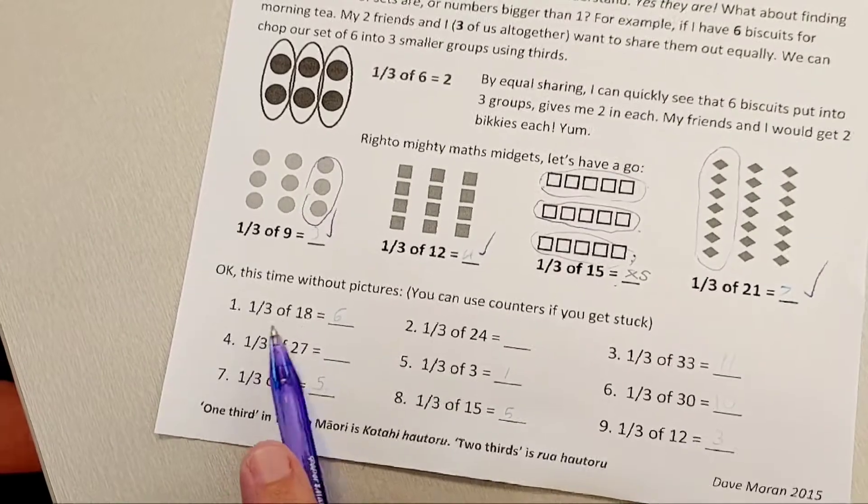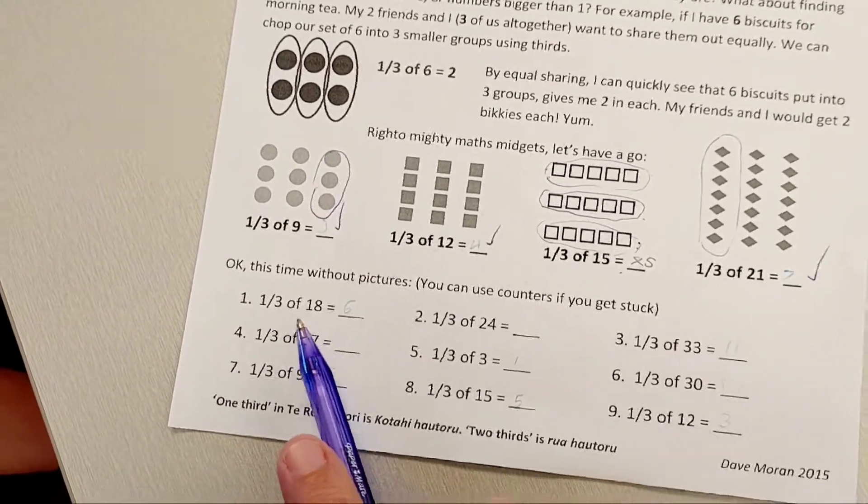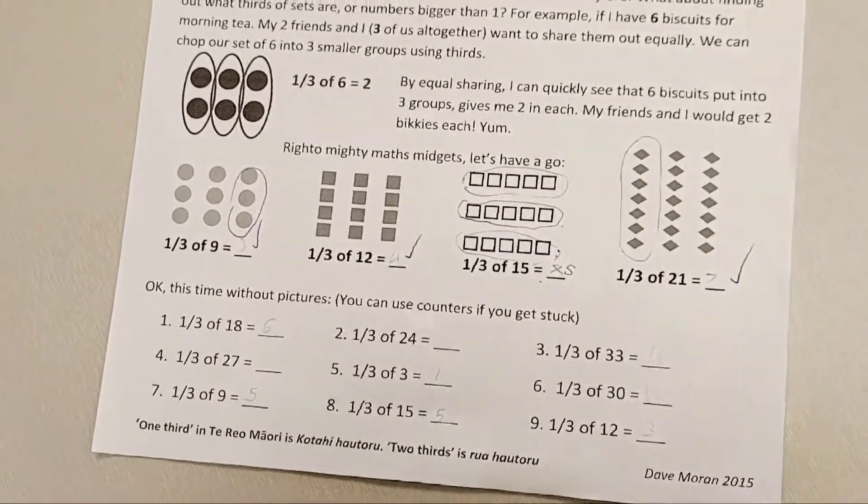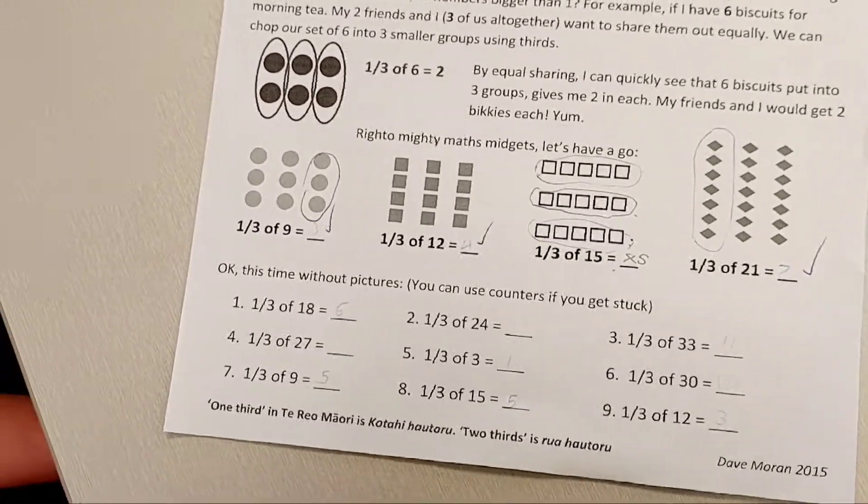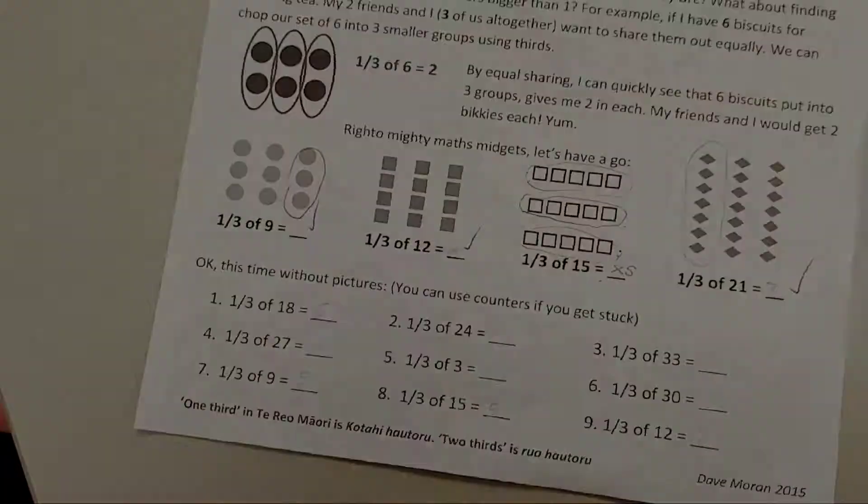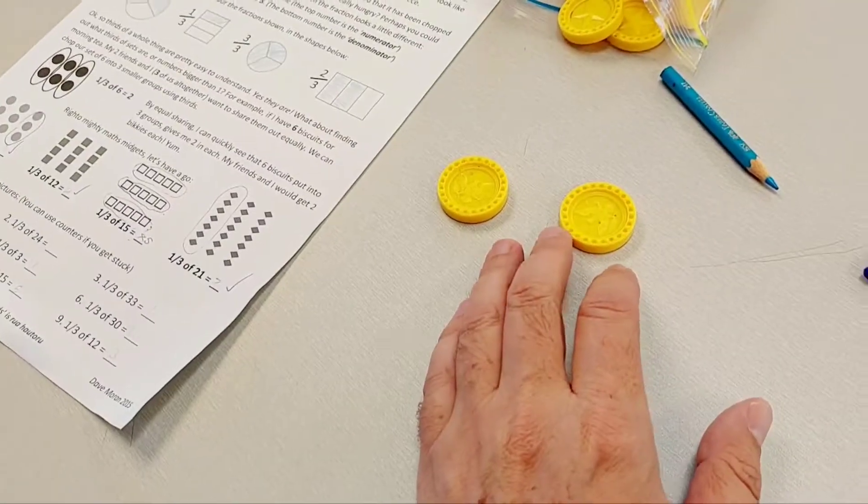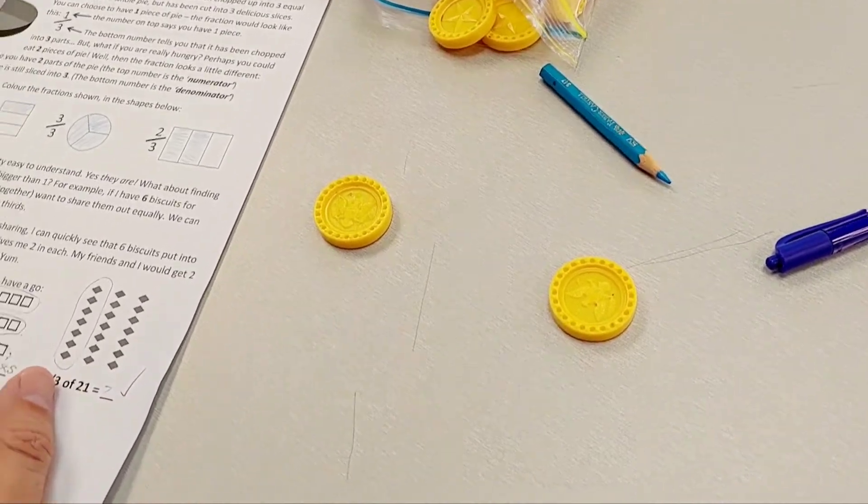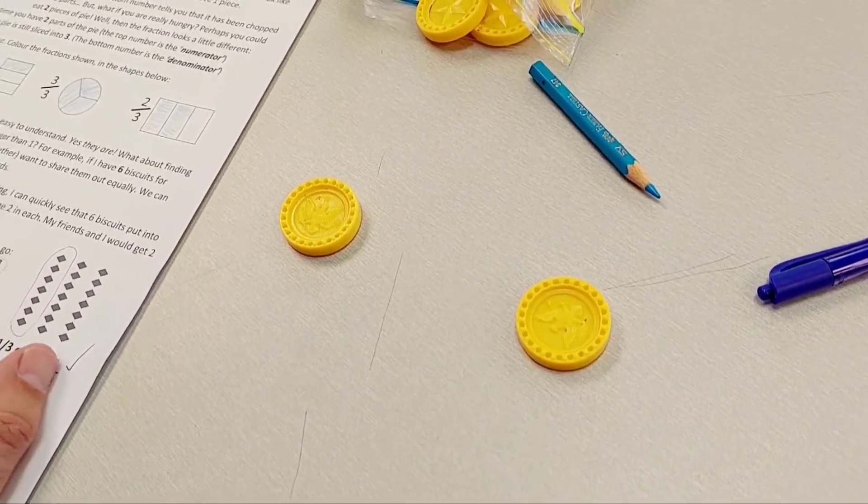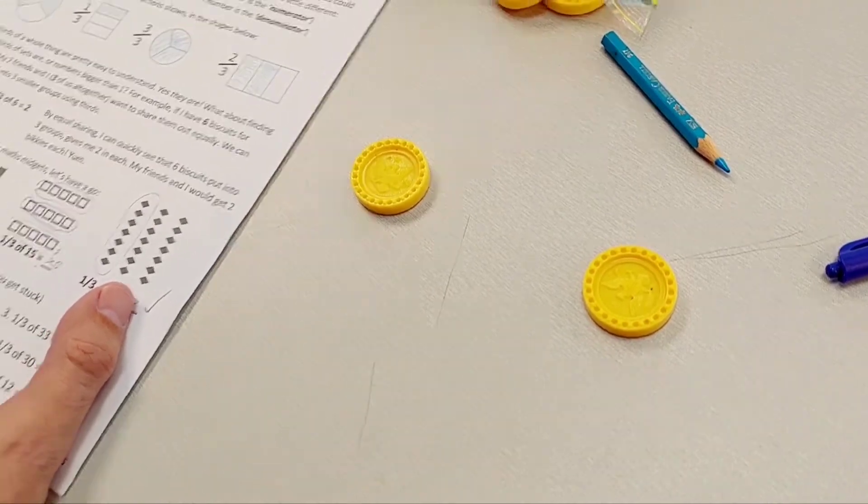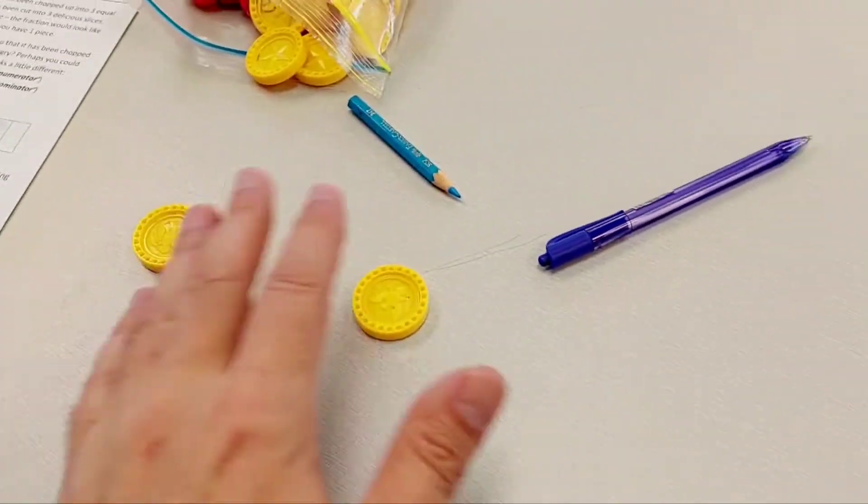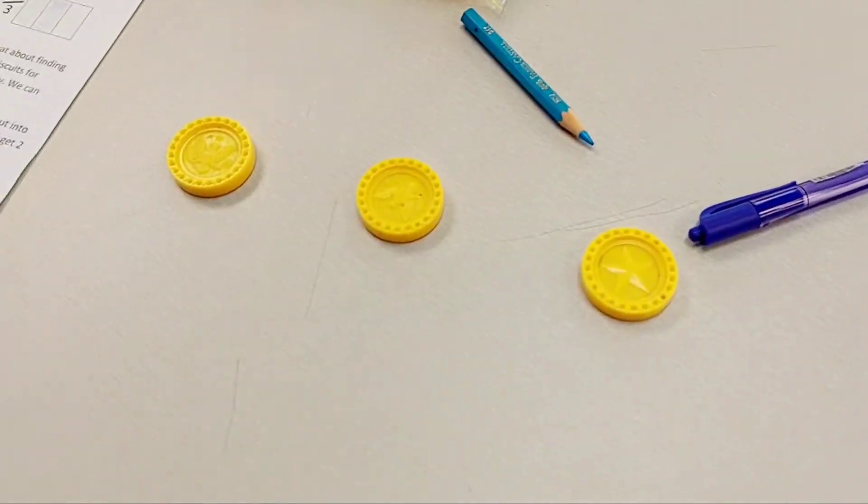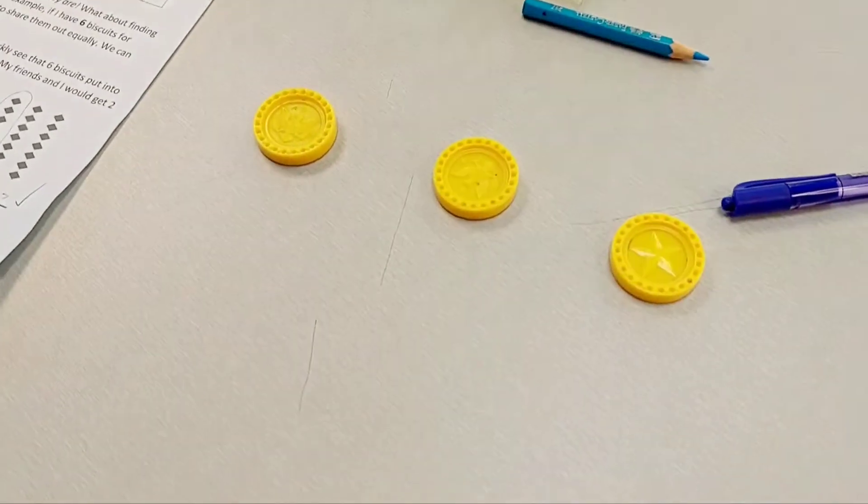So if you are really stuck and you say, oh, I don't know what a third of 18 is, and that's fine, I'll show you on a different piece of paper. Equal sharing works like this. We know that we're talking about thirds, right? So we're going to have three groups. So whatever number we have, we can equally share into those three groups.